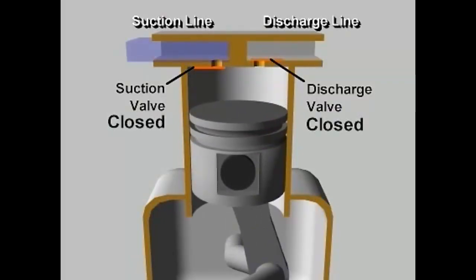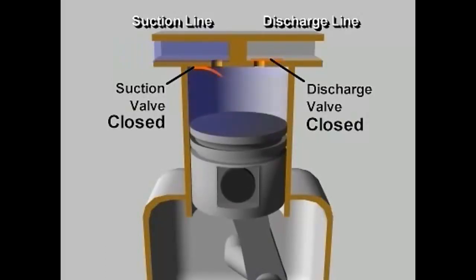Because both valves are closed, the downward moving piston reduces the pressure in the cylinder. As the pressure in the cylinder falls below the low side pressure in the suction line, the pressure difference opens the suction valve.